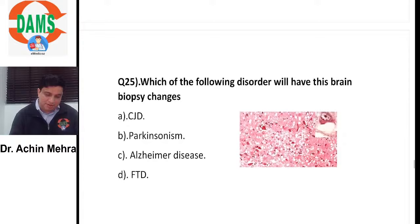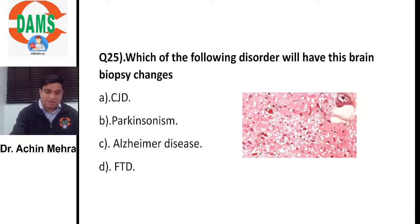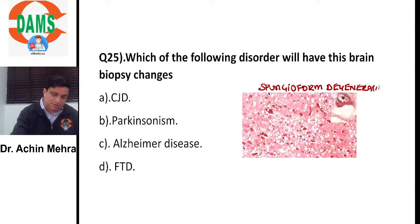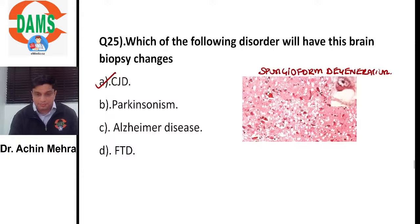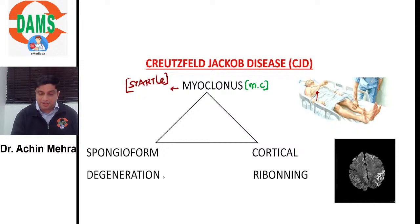The brain biopsy showing microscopic vacuoles replacing normal brain tissue, giving a sponge-like appearance, represents spongiform degeneration. This is seen in prion disease or CJD. Quick recap: CJD patients have myoclonus — specifically startle myoclonus — spongiform degeneration on biopsy, and MRI showing cortical ribboning with hyperintensities.